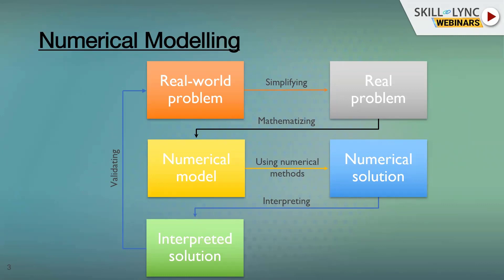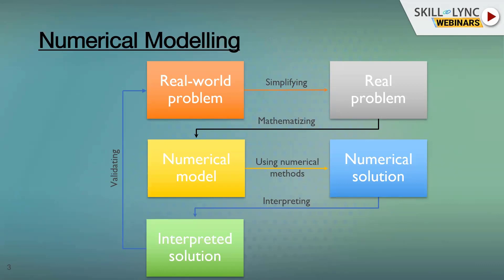Once the simplification is done, this real world problem — now converted into a simplified problem — is then converted into a set of mathematical equations. Once the mathematical model is ready, I can proceed to the numerical model. Using numerical methods, we can solve these equations. In the coming slides, I will explain how a real world problem can be converted to a numerical model and solved using numerical methods.